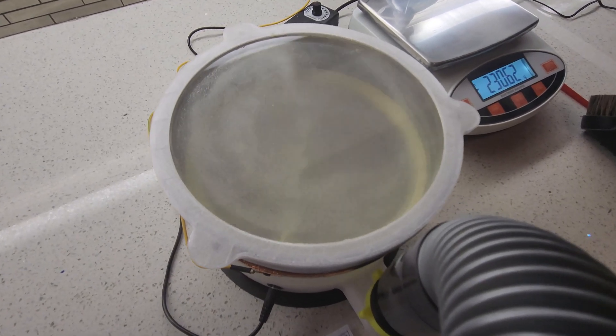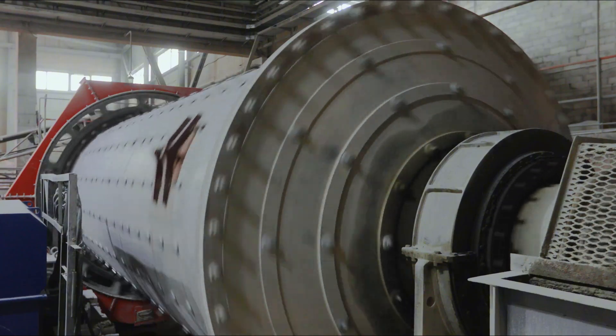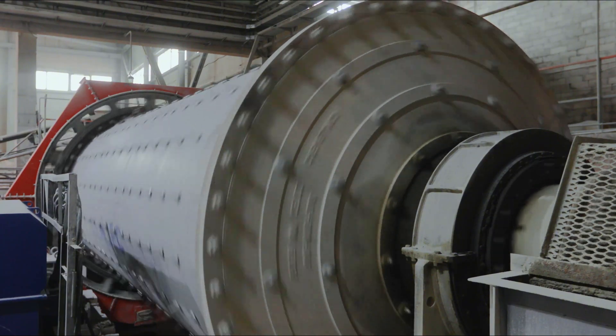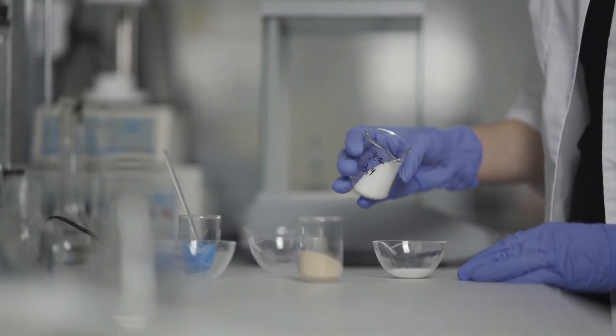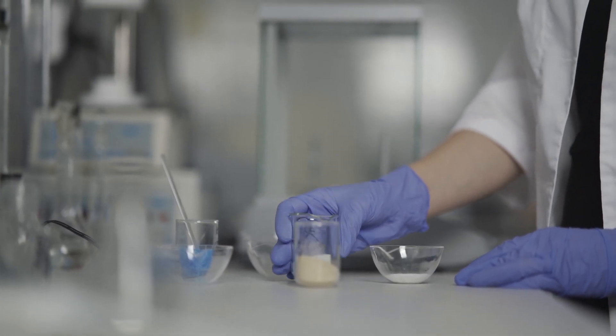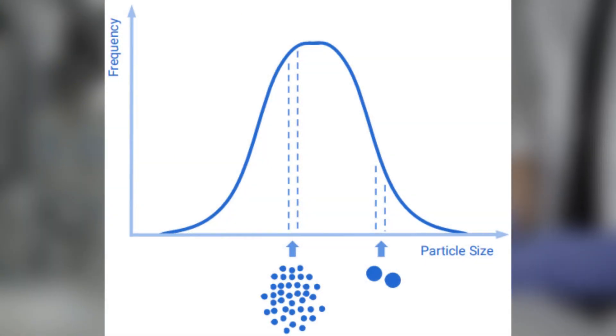So what is particle size analysis? Whenever a material is ground into a powder, it doesn't break down into uniform particles. Instead, grinding produces a range of particle sizes from larger fragments to fine dust. Particle size analysis is the process of measuring the size distribution in the lab to ensure that the final product meets specific requirements.